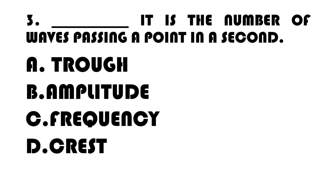Number 3. Blank is the number of waves passing a point in a second. A. Wavelength. B. Amplitude. C. Frequency. D. Crest.